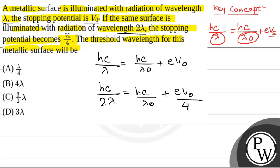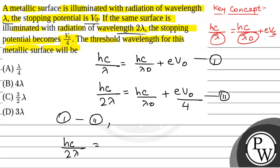If we subtract equation 2 from equation 1, that is equation 1 minus equation 2, we have hc/2λ = eV0 - eV0/4 = 3eV0/4. So eV0 = hc/6λ... or rearranging, eV0 = 4hc/6λ = 2hc/3λ.